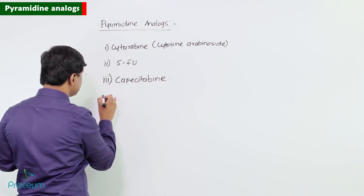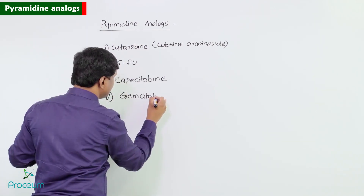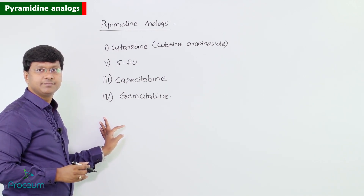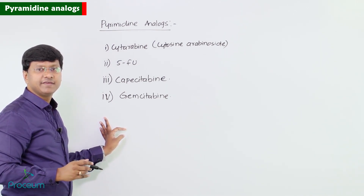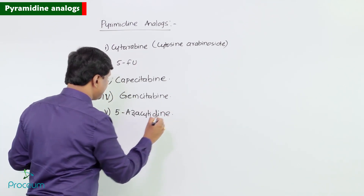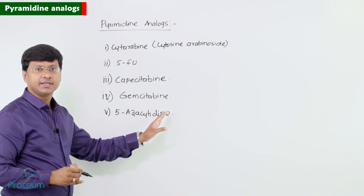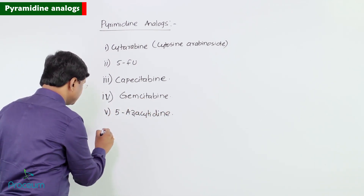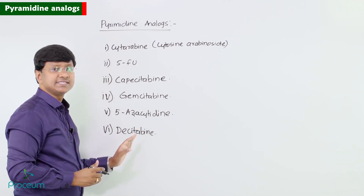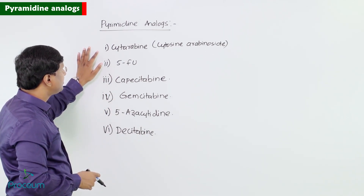Another important drug in the Pyrimidine Analogues group is Gemcitabine. We also have 5-Azacitidine and Decitabine. So these are the Pyrimidine Analogues.